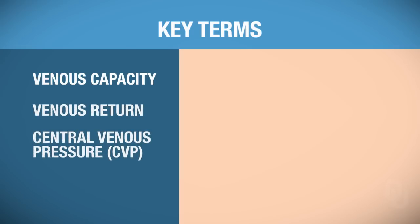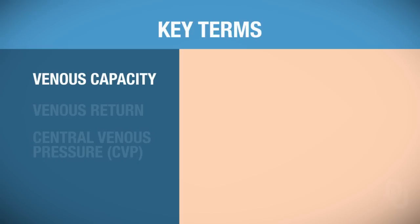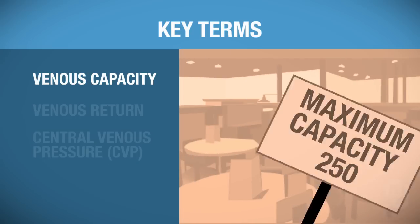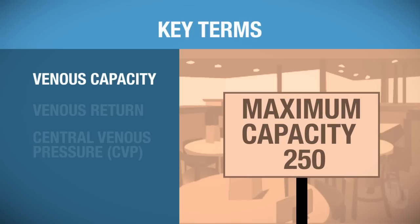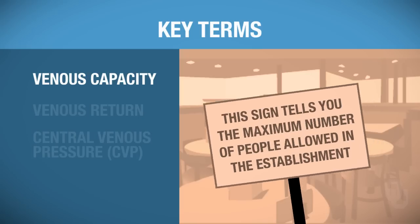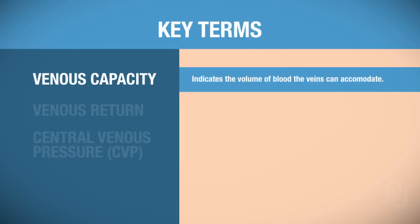Let's discuss venous capacity. Think about going to a restaurant — they always have a sign that says maximum capacity is some number. This sign tells you the maximum number of people you should have in that establishment. That is similar to venous capacity. Venous capacity indicates the volume of blood that the veins can accommodate.